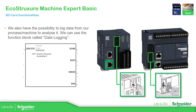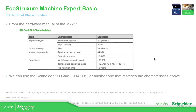Depending on the controller we have, we have different access. You can see — this one I believe is the book-style one, the TM221M. On top we have this cover, and on the other side we have the cover for the SD card. These are the characteristics required for the SD card if you want to use it, based on the manual.